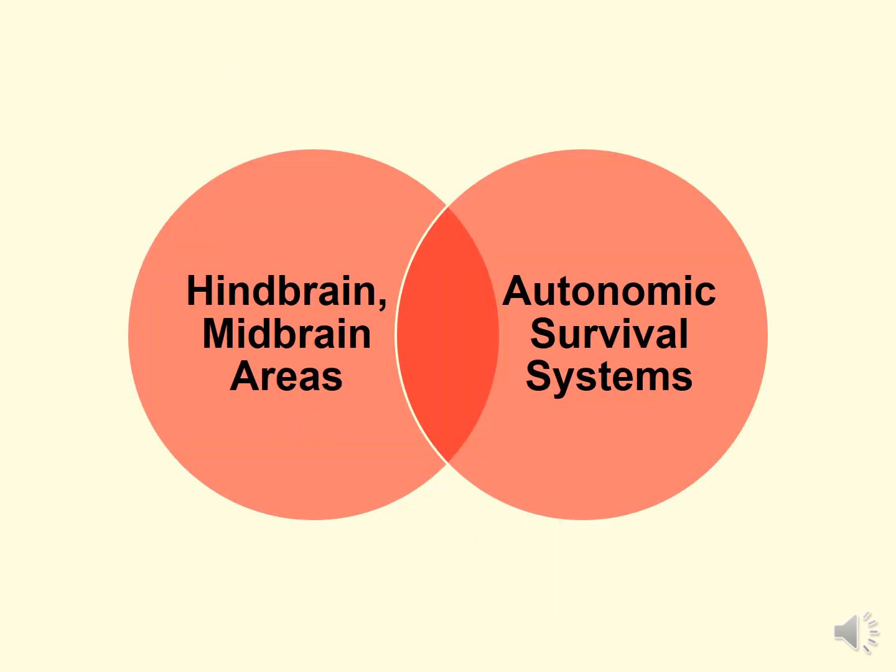To summarize structures and functions so far: in the hindbrain and midbrain there are lots of structures serving basic autonomic survival functions — the stuff which keeps your lights on, keeps you alive, and keeps you not in a coma. That said, there's also stuff happening down here that involves cognitive functions distributed more broadly throughout the brain.